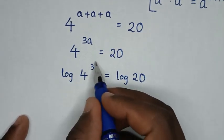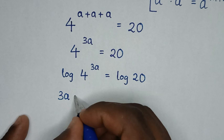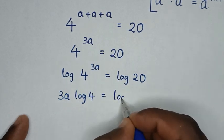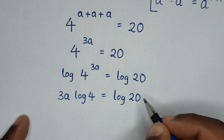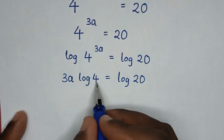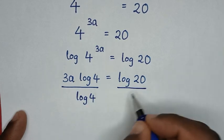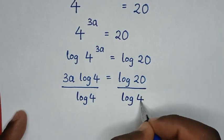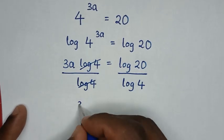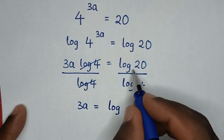This power of 3a will move to the front. So it will be 3a times log of 4 is equal to log of 20. In the next step, we divide by log of 4 on both sides, so log of 4 cancels, giving 3a is equal to log of 20 over log of 4.